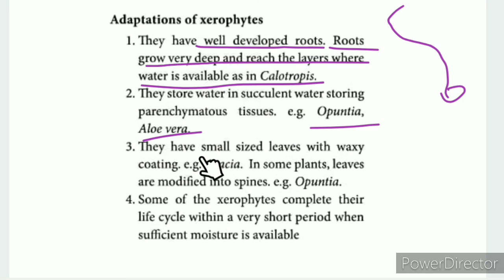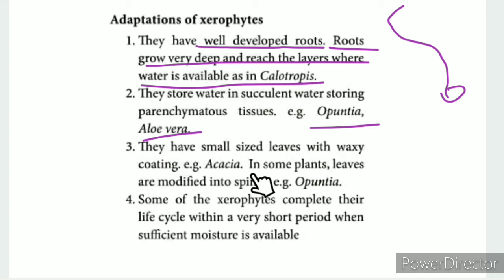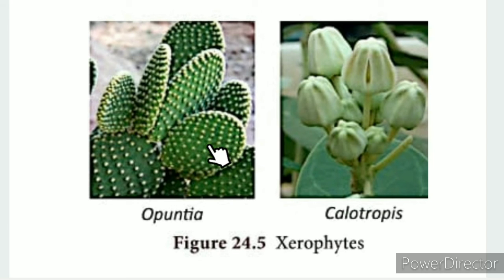Xerophytes have small-sized leaves with waxy coatings — for example, Acacia. The waxy coating helps reduce transpiration. In some plants, leaves are modified into spines, as in Opuntia, where the stem is green and performs photosynthesis.